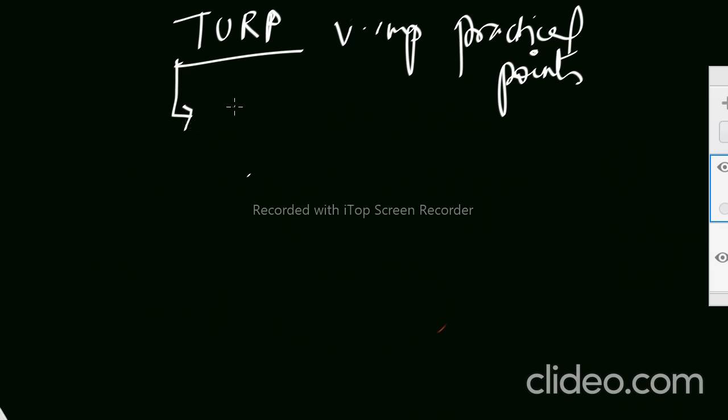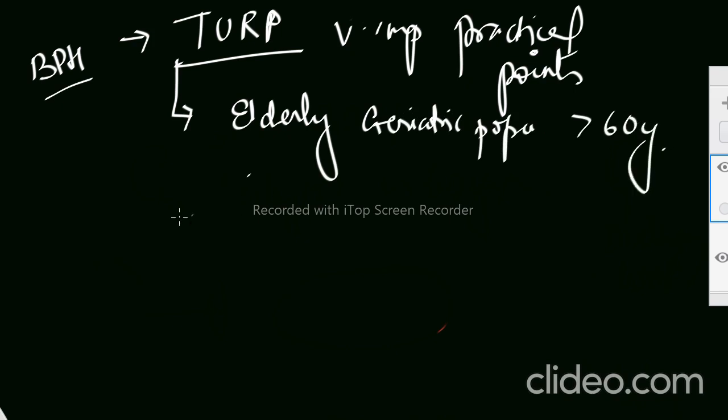First is that the patient is always elderly, as this is surgical treatment used to treat BPH. So the patient will always be from the geriatric population, over 60 years of age. Next important implication is related to the position. What is the position? Yes, we all know it is lithotomy.